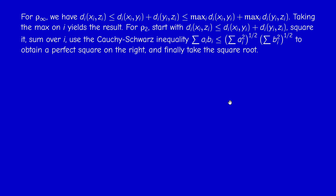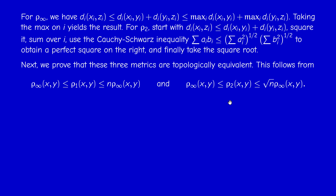Why are they topologically equivalent? We can easily prove that ρ∞ ≤ ρ₁ (since the maximum is ≤ the sum when everything is non-negative), and ρ₁ ≤ n·ρ∞. For ρ₂, we get ρ∞ ≤ ρ₂ and ρ₂ ≤ √n·ρ∞. So ρ₁, ρ₂, and ρ∞ are not just topologically equivalent — they are Lipschitz equivalent, which is something stronger than topological equivalence.